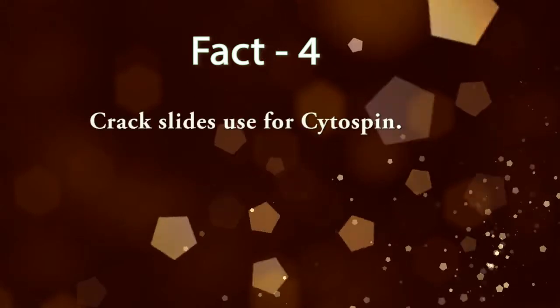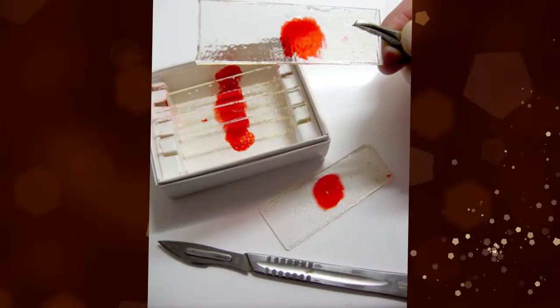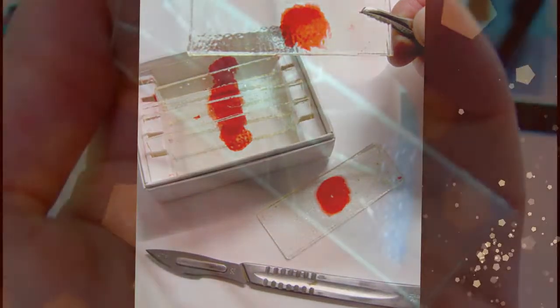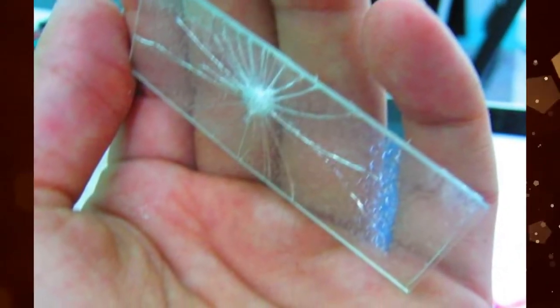Fact number four: Cracked slides used for cytospin. If slides present even very small crack, they can be completely destroyed after cytospin process.